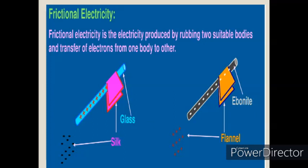Next is frictional electricity — a method to charge an object, otherwise called the triboelectric effect. Frictional electricity is the electricity produced by rubbing two suitable bodies and the transfer of electrons from one body to another. Initially the two objects are neutral. When they are rubbed together, electrons transfer from one object to another; one object becomes positively charged and another becomes negatively charged. For example, ebonite and flannel are taken — ebonite becomes negatively charged after rubbing and flannel becomes positively charged.